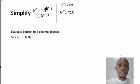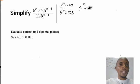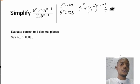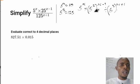Now they all have the same base, so the question becomes: 5^s multiplied by (5²)^(s minus 1), divided by (5³)^(s plus 1). Let's open the brackets. We have 5^s, then 5 to the power of 2 with bracket open, giving s minus 1, and in the denominator 5 to the power of 3 with bracket s plus 1.